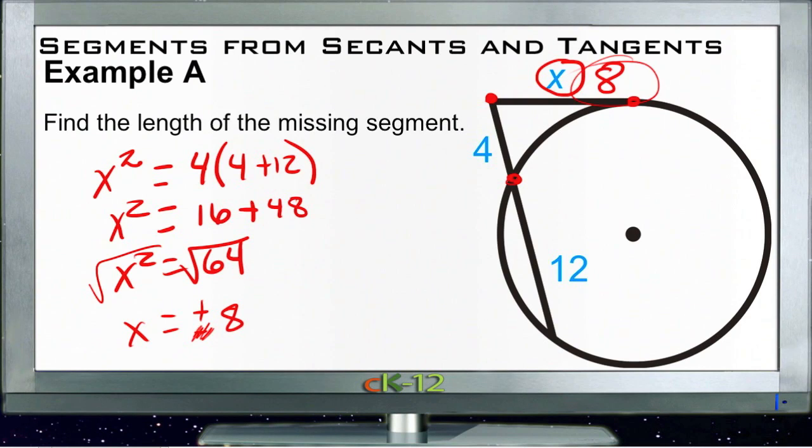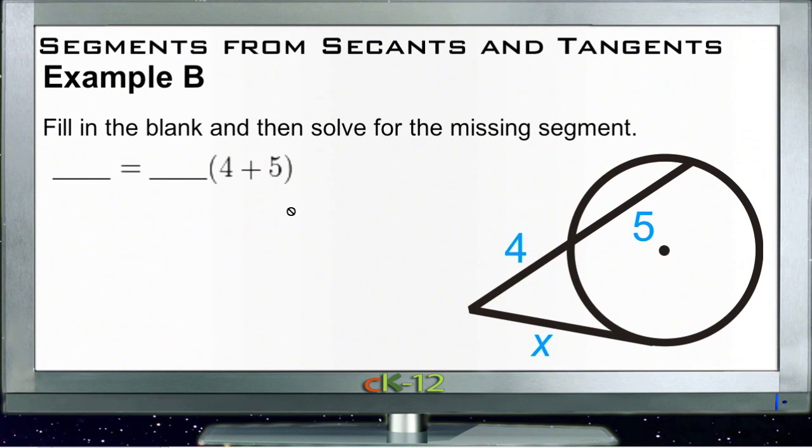All right, let's take a look at Example B. Example B says first fill in the blank and then solve for the missing segment. So this is very similar to the last one, we just need to sort of lay out what we're going to do ahead of time.